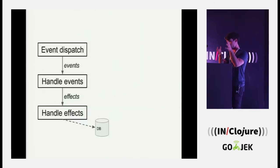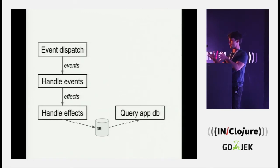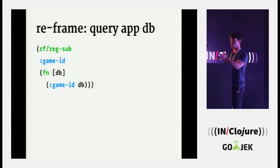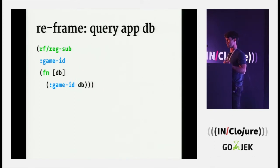Effect handlers often change your database. If you change your database, the loop continues — you need to react to that. This happens through queries against the database, which are called subscriptions. You register them like this. The simplest subscription just extracts a value from the database. You give it a name — like game-id — and in the simplest form a function that takes the database, extracts a value, and returns it.